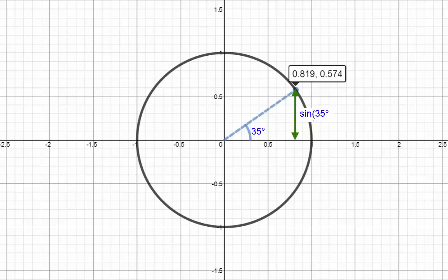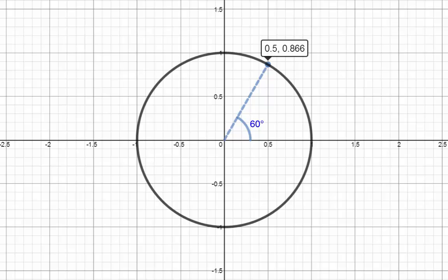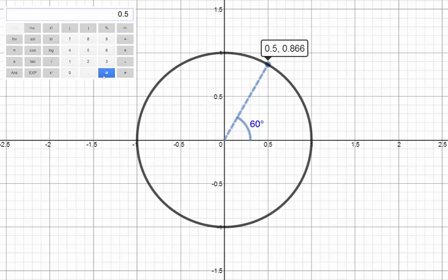For example, cos 60 degrees is 0.5 and sin 60 degrees is 0.866. Just checking again on our calculator, cos 60 is indeed 1 half and sin 60 is about 0.866.